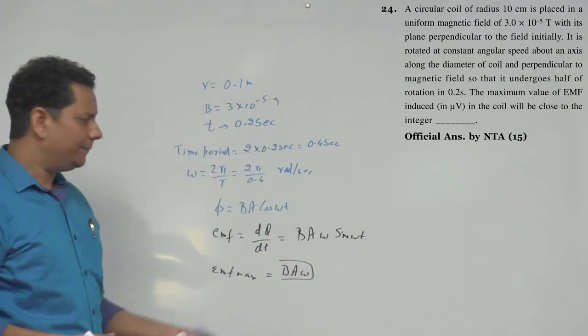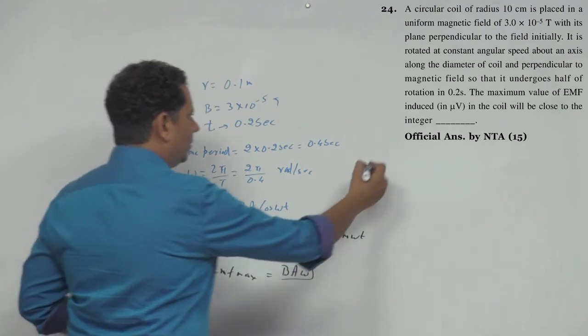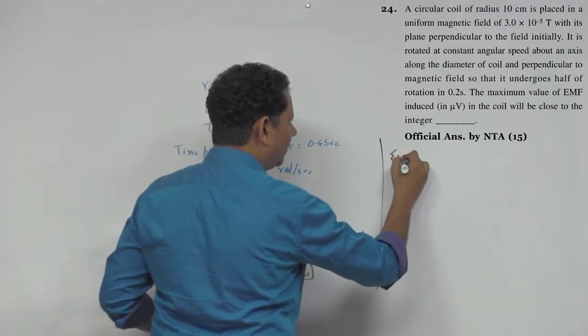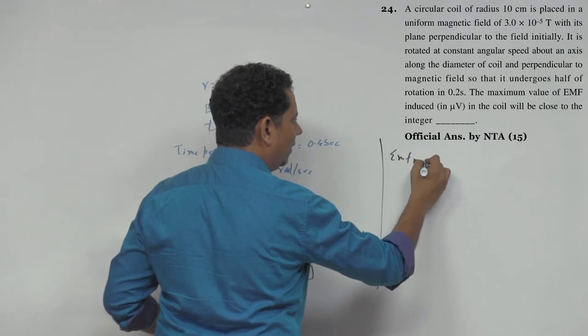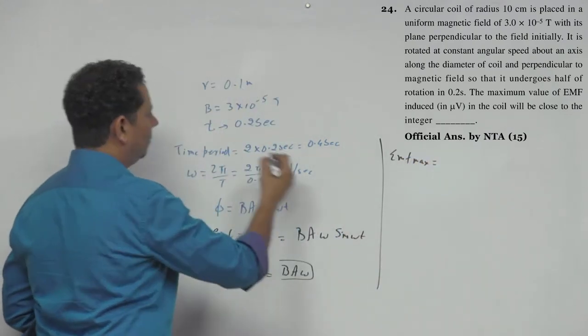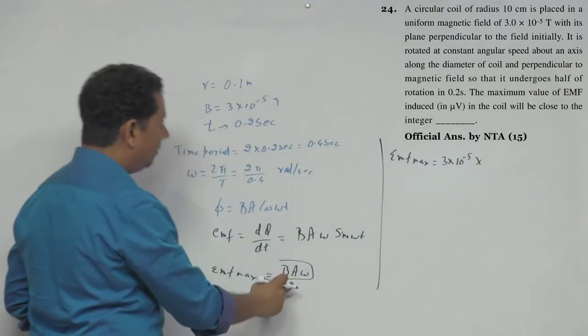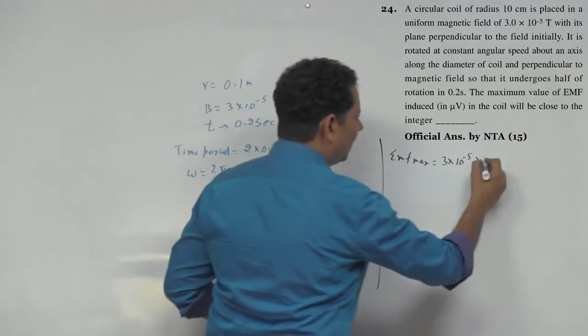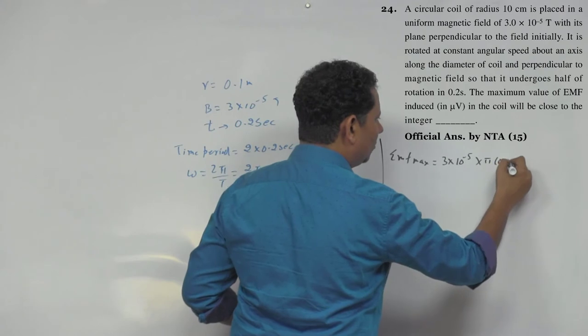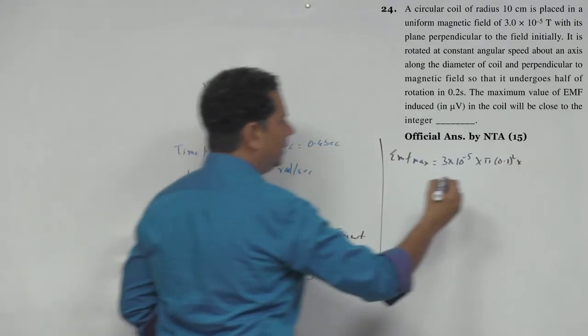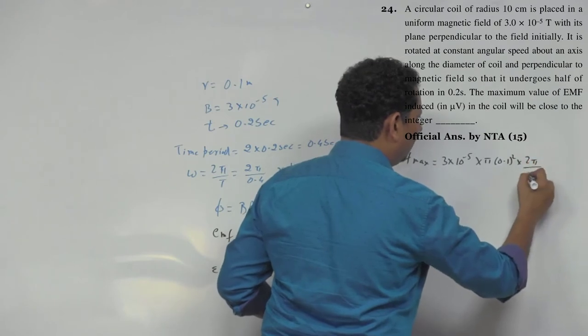So here the data is given, BA omega. Your emf maximum value you'll write as B is 3 multiplied by 10 to the power minus 5 multiplied by A. A is pi r square, so pi multiplied by 0.1 square multiplied by omega. Omega we calculated is 2 pi divided by 0.4.